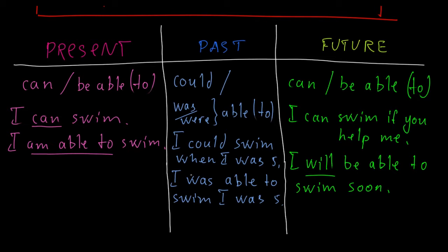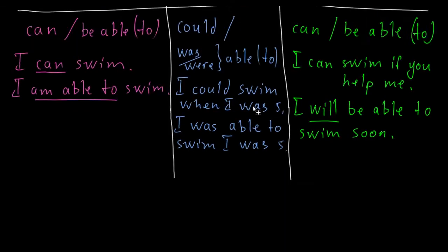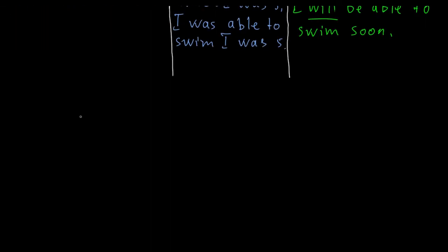As we see, to express ability, we just need can, could, and be able to. What about inability? If I want to say that I'm unable to do something, cannot, or just can't, and of course, its form could not, or its short form couldn't, equals inability.